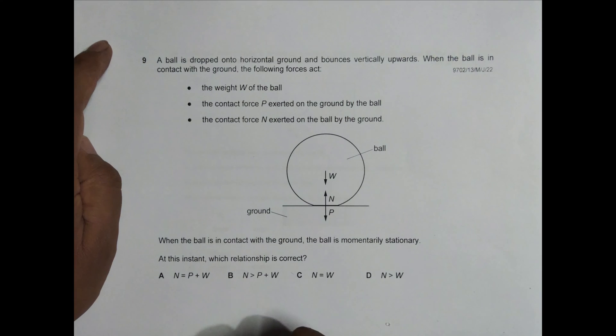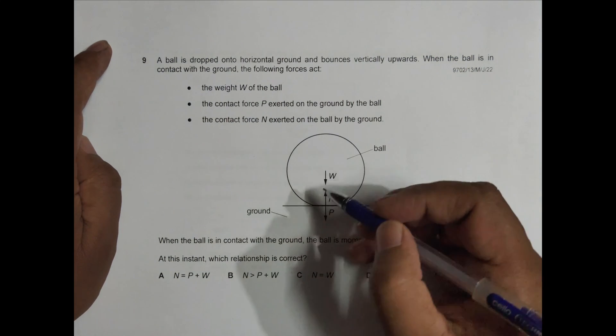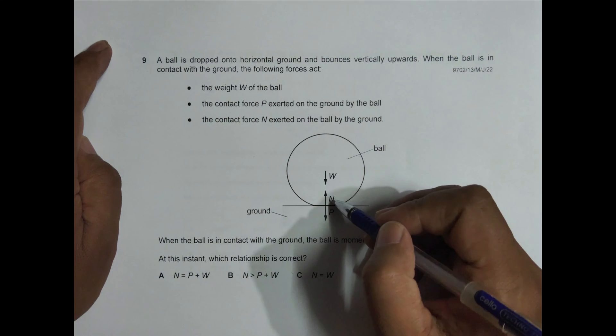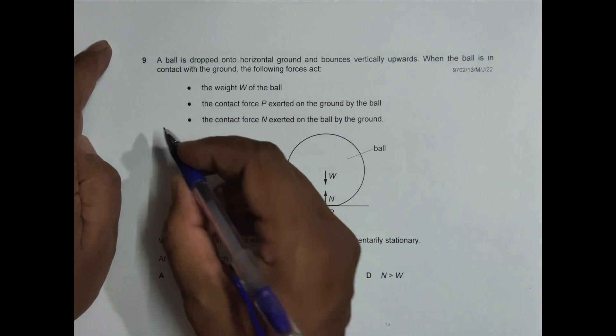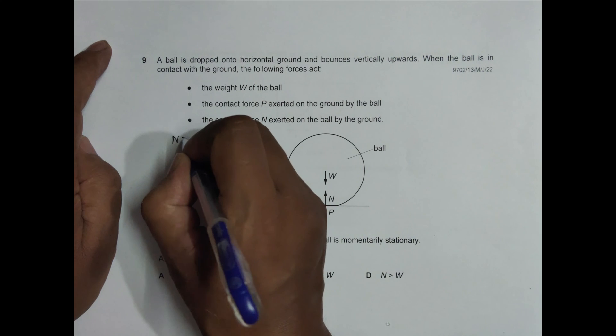One thing that we need to remember here is that N and P should be equal, N equals P, because they are contact forces and an action-reaction case. So that's why we must have N should be equal to P.